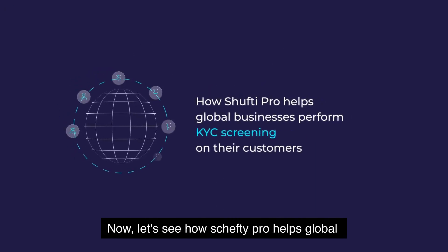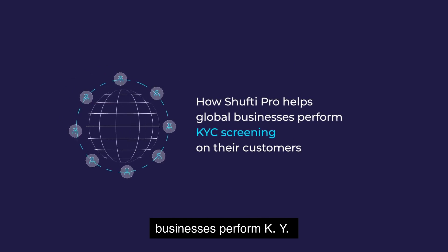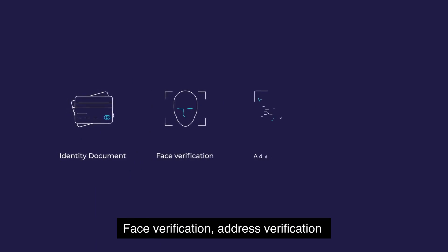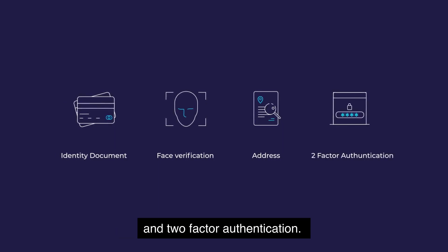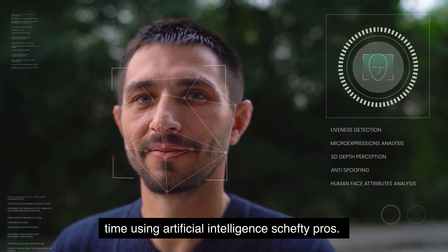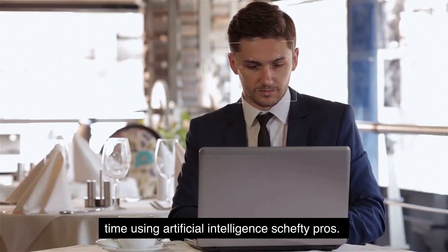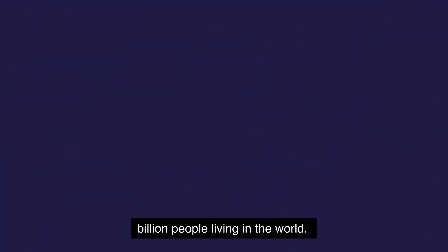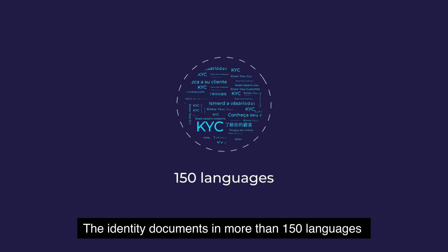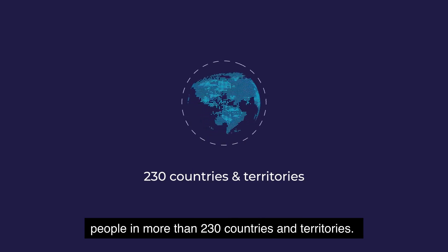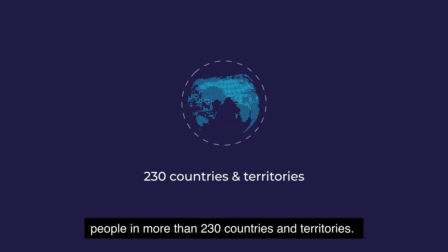Now let's see how Shufti Pro helps global businesses perform KYC screening on their customers. Shufti Pro performs KYC screening through identity document verification, face verification, address verification, and two-factor authentication. Our system is designed to verify individuals in real time using artificial intelligence. Shufti Pro's KYC screening solution can verify any of the 7 billion people living in the world, with identity documents in more than 150 languages. Until now, we have successfully verified people in more than 230 countries and territories.